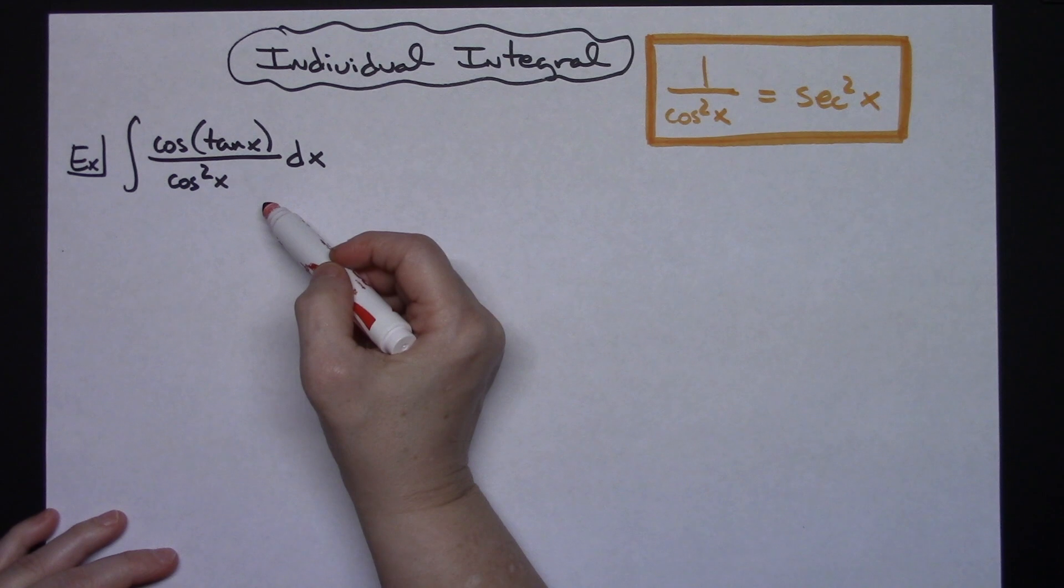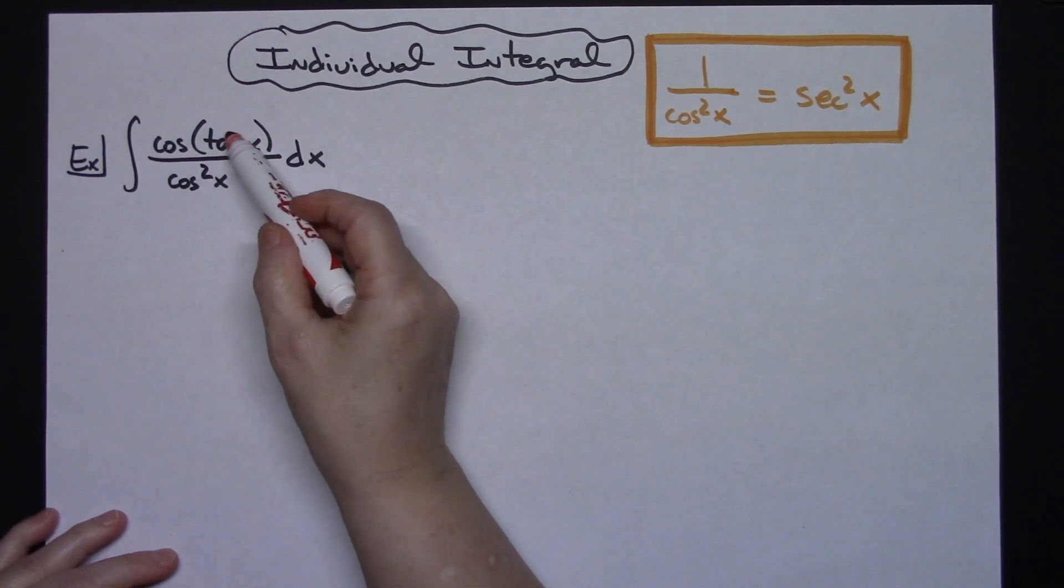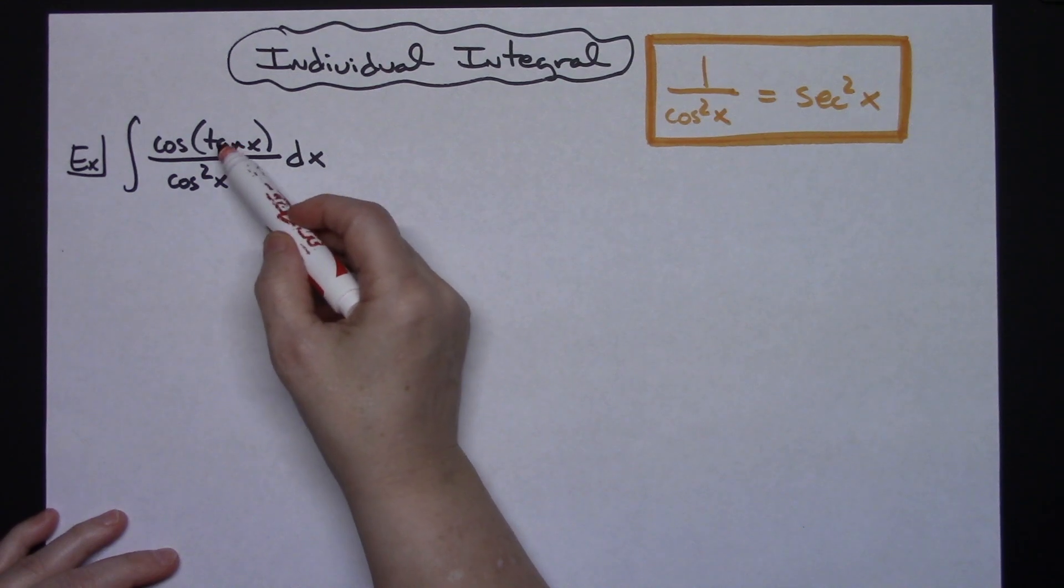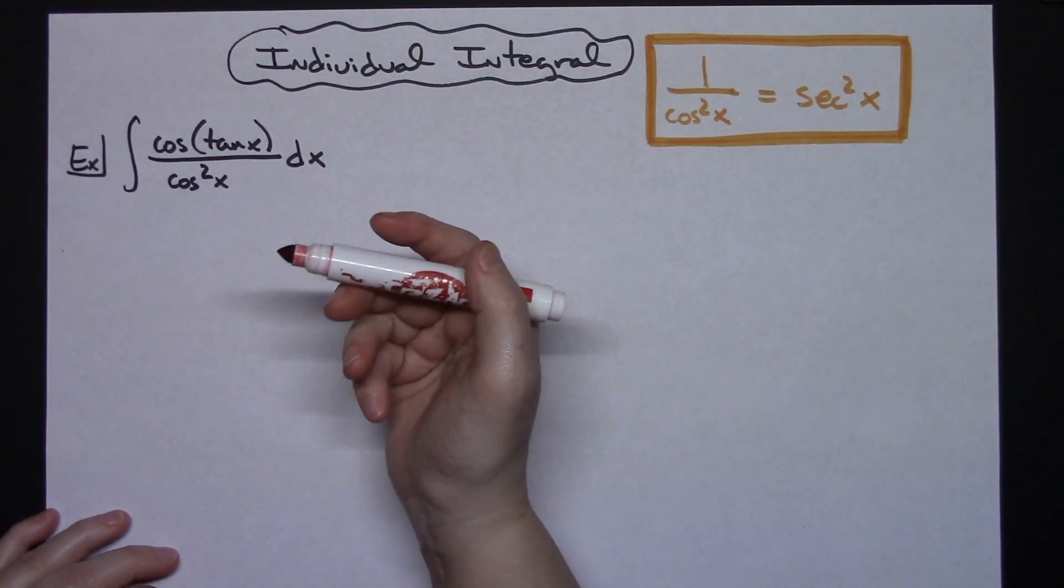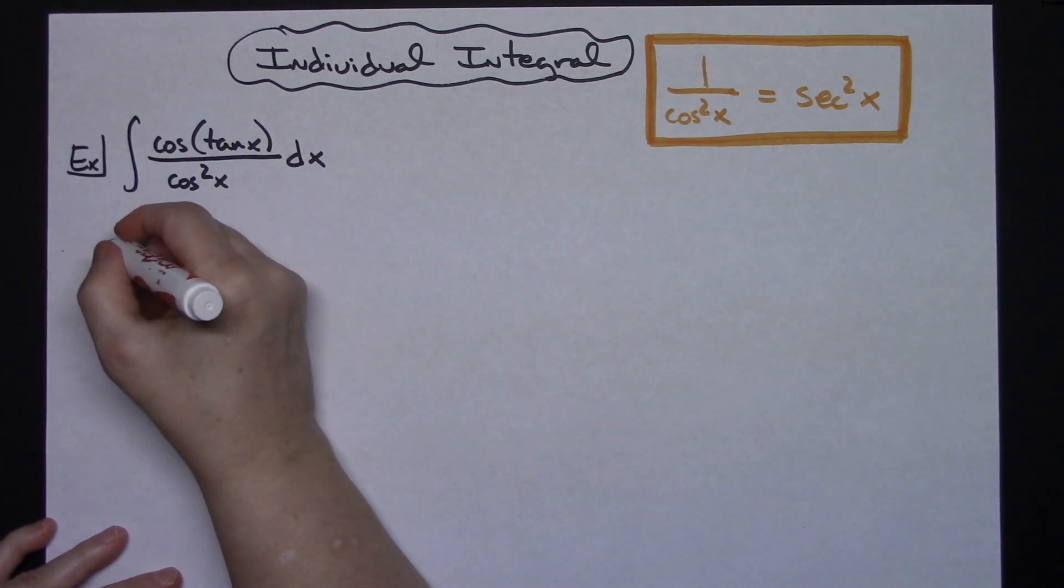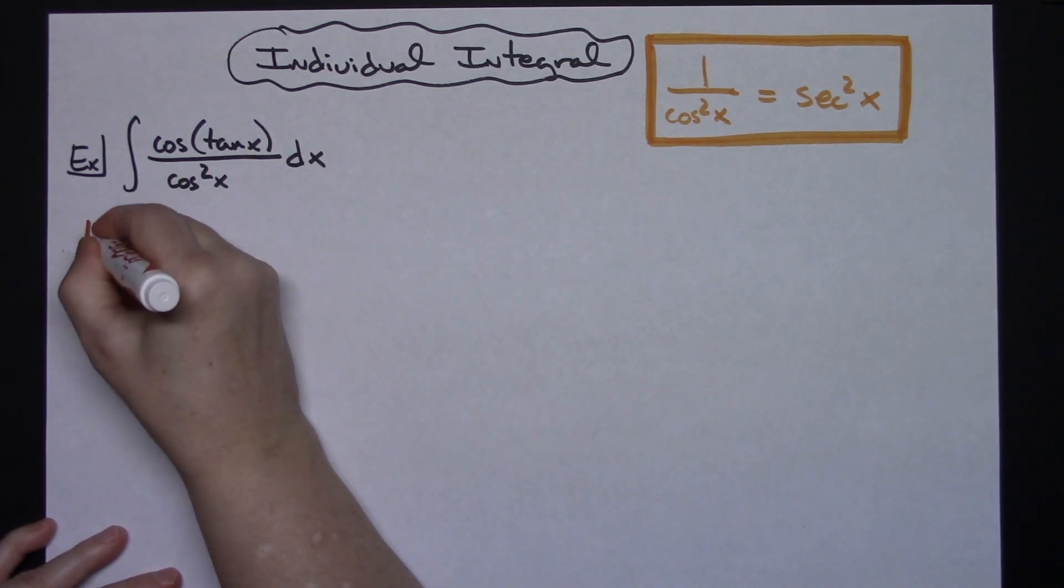I'm going to take a look at this integral and try to find the inside part of my function. I've got cosine of tangent x here. That tangent x, since it's on the inside part of a composite function, is a really good place to start. We're going to let u equal tangent x.